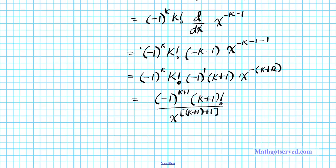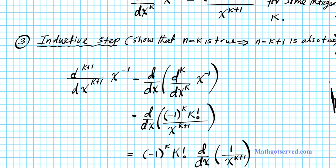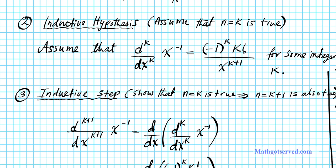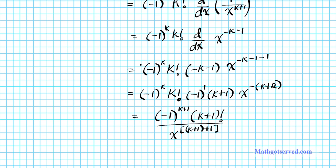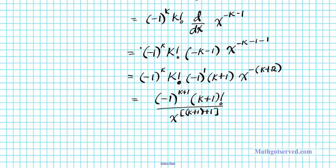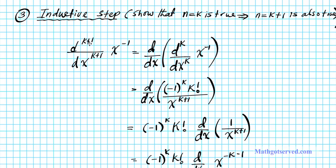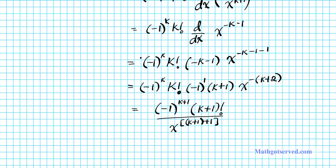And that's exactly what we want. If you notice, looking at our assumption, all the k's have been advanced to k plus 1 as a result of advancing the left side to k plus 1 — basically taking the k plus 1 derivative. So we have the situation where d^(k+1)/dx^(k+1) of x to the negative 1 is equal to negative 1 to the k plus 1 times k plus 1 factorial over x to the k plus 1 plus 1. That's exactly what we want.